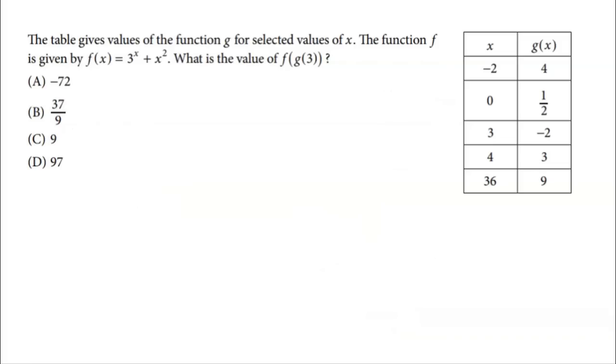Next question. The table gives values of a function g for selected values of x. Let g(x) = af(bx) + c where a, b, and c are positive constants. The function f is given by f(x) = 3^x + x². What is the value of f(g(3))? This is a composition function. There's definitely going to be several of these on the test. We always start on the inside. What is g(3)? I go to my table over here. If I plug 3 into g, I get negative 2. So g(3) = -2.